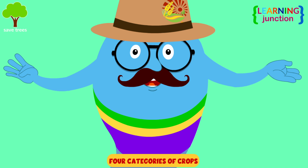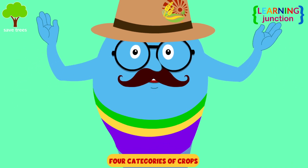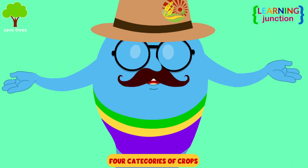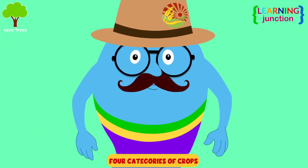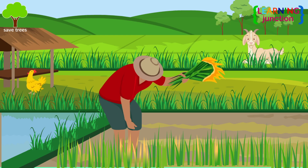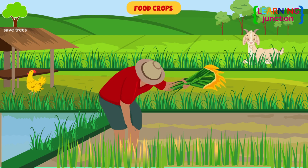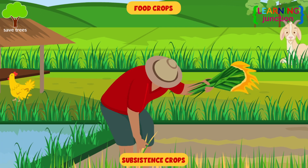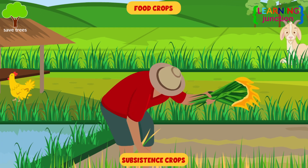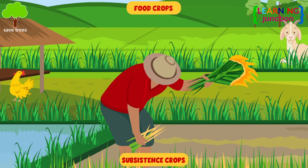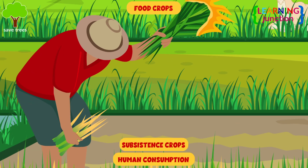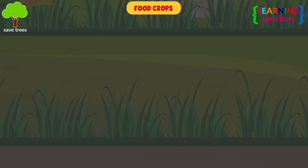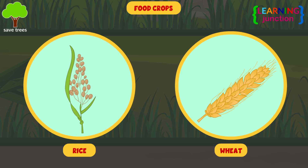There are four categories of crops depending on the usage. Food crops: they are subsistence crops that are meant for human consumption. For example, rice, wheat, etc.